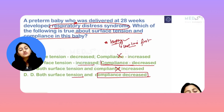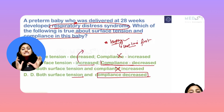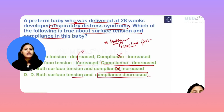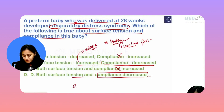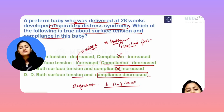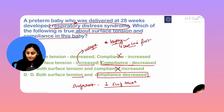No surfactant means surface tension is increased — surfactant decreases surface tension and prevents alveolar collapse. When surface tension increases, the alveoli collapse. Please remember: the role of surfactant is to decrease surface tension in the alveoli. If surfactant is absent, surface tension will increase.